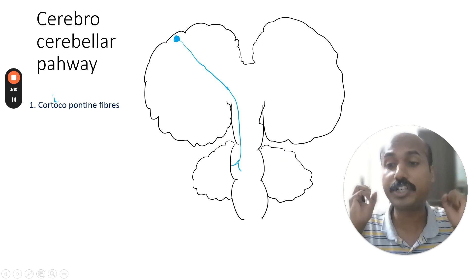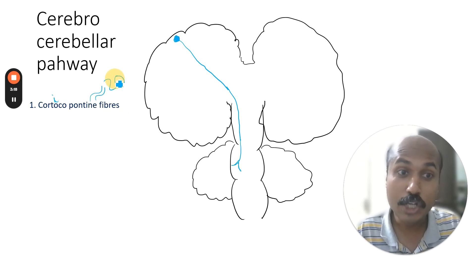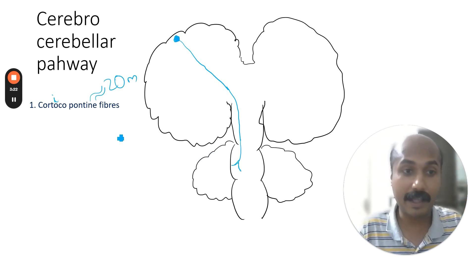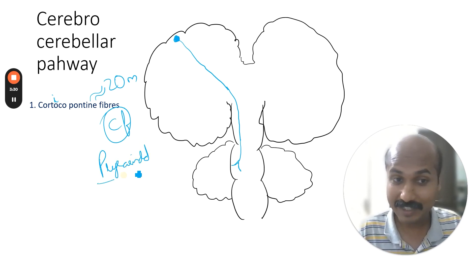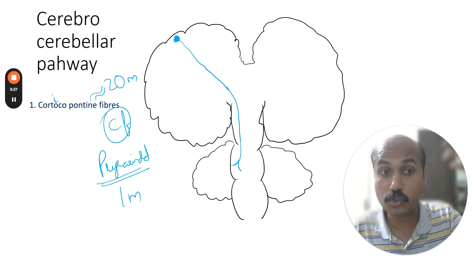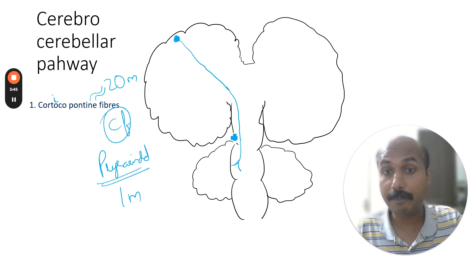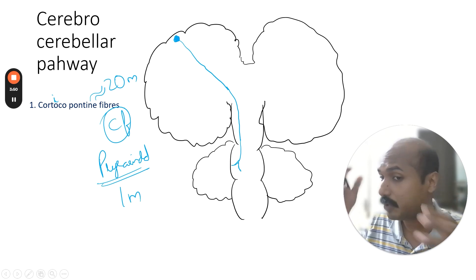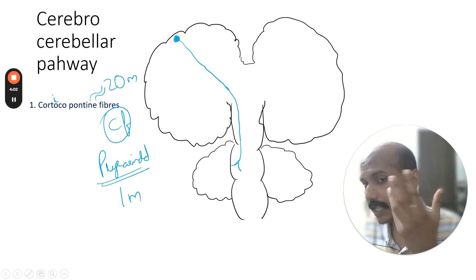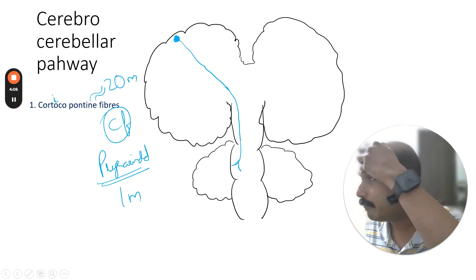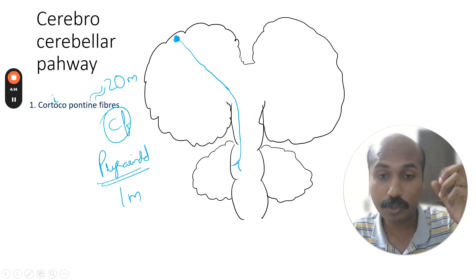This is a very large group of fibers. The estimates are that the number of corticopontine fibers is approximately 20 million. If you compare this with the pyramidal tract, which is one of the most important tracts in the brain, that is only one million — so this is almost 20 times more massive. This pathway arises from multiple lobes: frontal, parietal, temporal, and occipital, giving frontopontine, parietopontine, temporopontine, and occipitopontine subgroups.